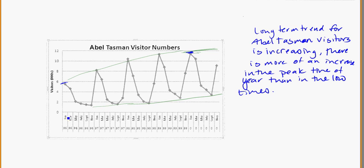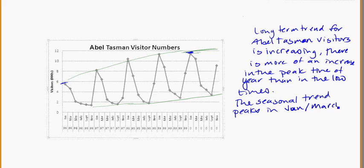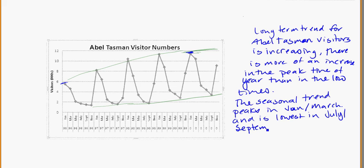The highs are obviously in the summer months — June and March as we can see. So the seasonal trend peaks in January to March, and is lowest around July to September, in winter, as you might expect. That's our short-term trend. There isn't really anything too unusual going on here — a little bit of variation, but nothing too dramatic. A nice graph like this cycles quite nicely.